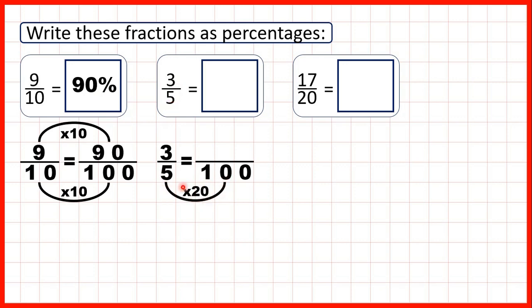We have three fifths. 5 times 20 is 100, because 5 times 2 is 10, so 5 times 20 must be 100. And again, what we do to the denominator we need to do to the numerator as well. 3 times 20 is 60, so that's 60 percent.